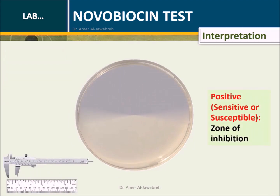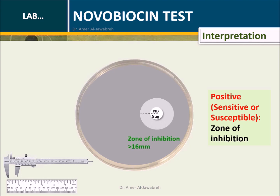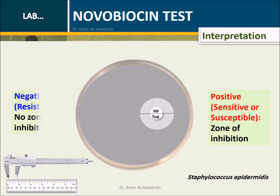Interpretation: Using a ruler or caliper, measure the zone of inhibition for both disks. A zone of inhibition greater than 16 mm is considered sensitive, and thus diagnosed as S. epidermidis. A zone less than 16 mm is considered resistant, and thus S. saprophyticus.